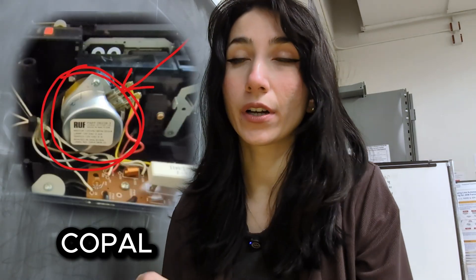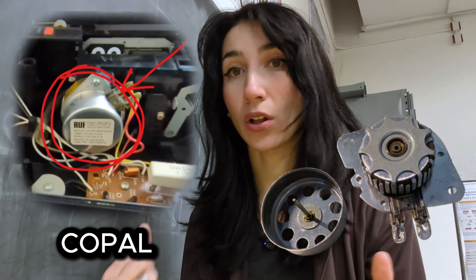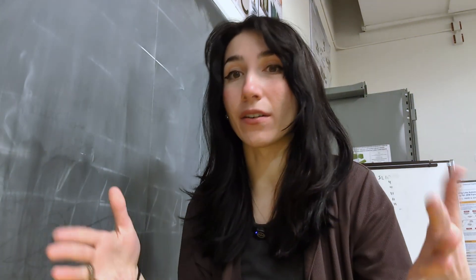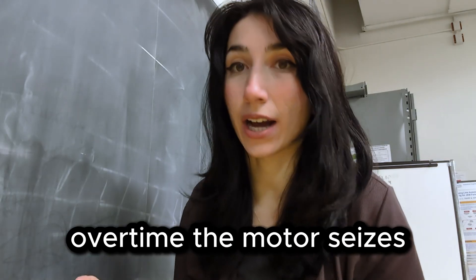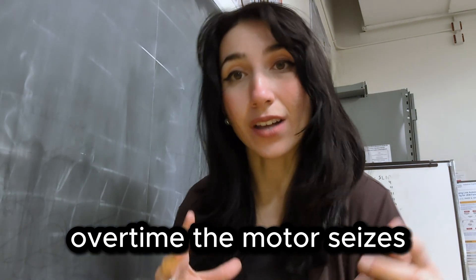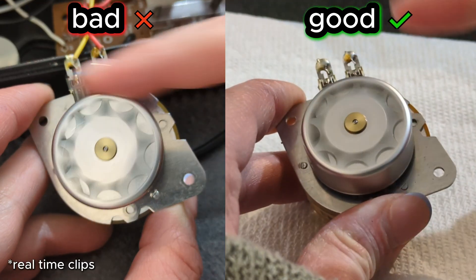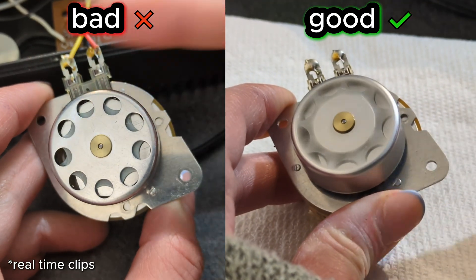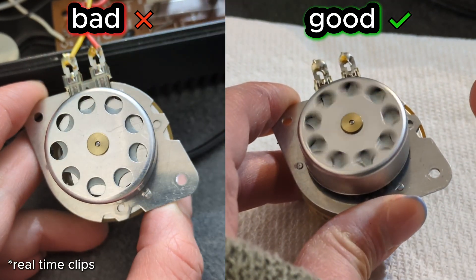Through my research for this repair project, I learned that the Copal motor, the synchronous motor you see in this clock, is actually pretty common among flip clock assemblies. They all have a similar issue that over time, the motor kind of gunks up.